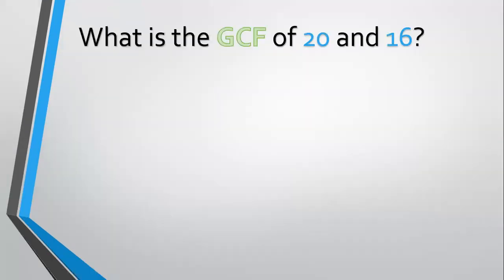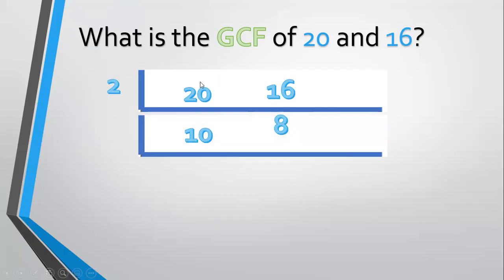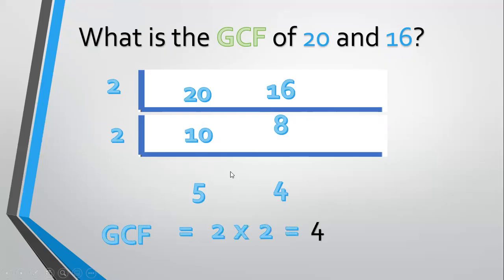Another example, what is the GCF of 20 and 16? Align 20 and 16. Divide by a prime common factor, 2. 20 divided by 2 equals 10. 16 divided by 2 equals 8. Divide again by a prime common factor, 2. 10 divided by 2 equals 5. 8 divided by 2 equals 4. So the GCF is equal to 2 times 2 equals 4.